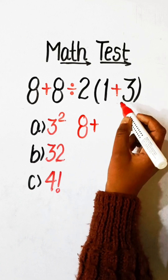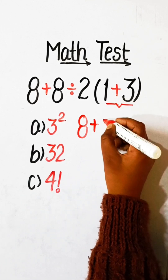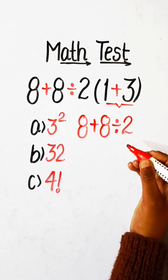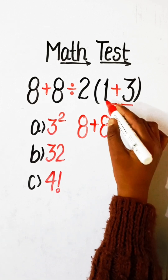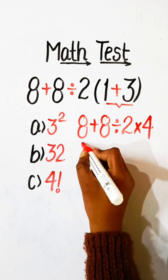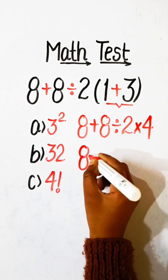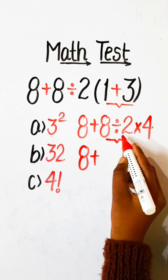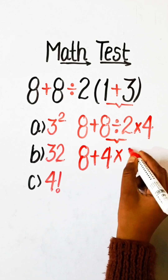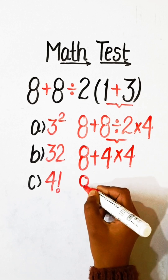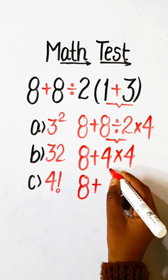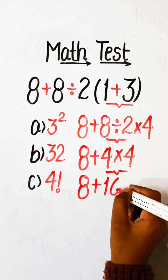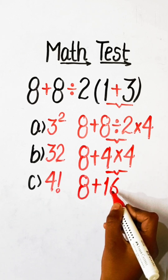First we solve the bracket part: 1 plus 3 is 4. Then 8 divided by 2 is 4, multiplied by 4. We divide first, so 8 divided by 2 is 4, then multiply: 4 multiplied by 4 is 16. Then 8 plus 16 is 24.